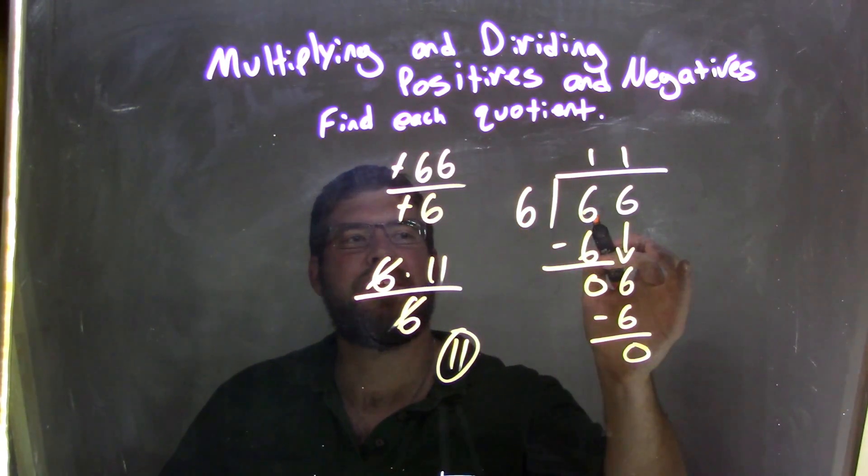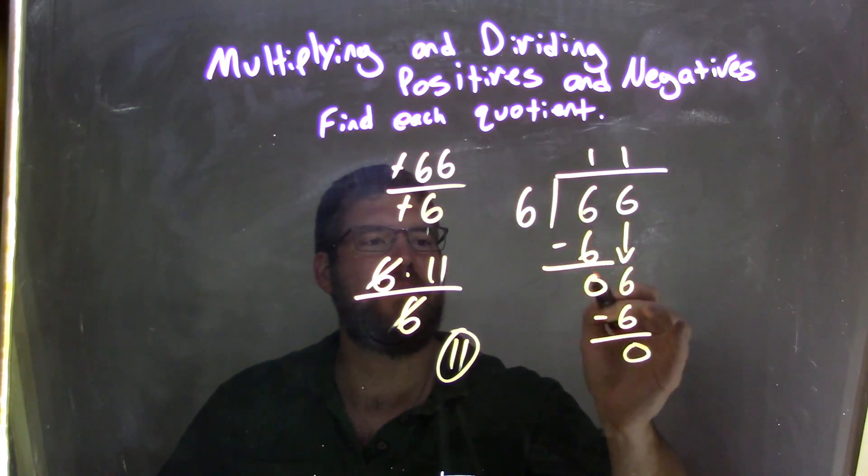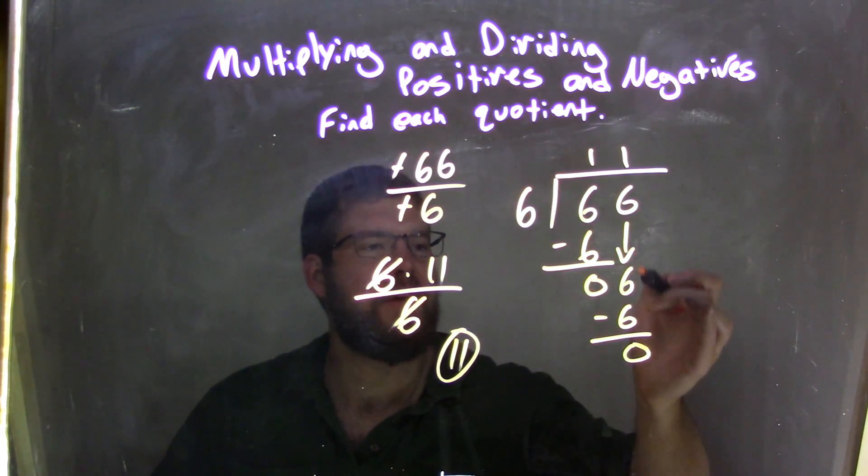Or in this method, 6 goes into 6 one time. Bring down this 6. 1 times 6 is 6. Subtract it. We have 0. Bring down this 6. We have 6 right there.